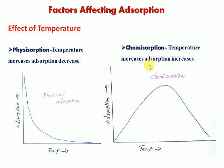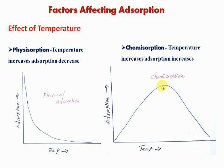In chemisorption, when temperature increases, adsorption also increases. On a graph with temperature on the x-axis and adsorption on the y-axis, the curve rises. Once a particular temperature is reached where maximum new compound formation has occurred on the solid surface, the reaction is complete and chemisorption begins to decrease. So: as temperature increases, chemisorption increases, then after maximum new compound formation, chemisorption decreases again.